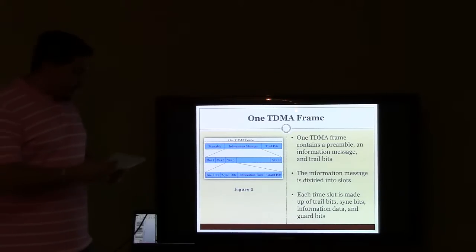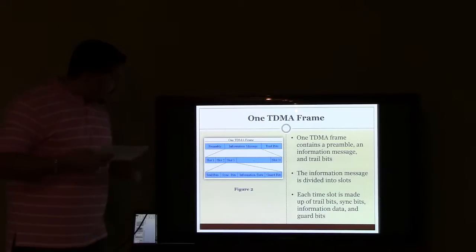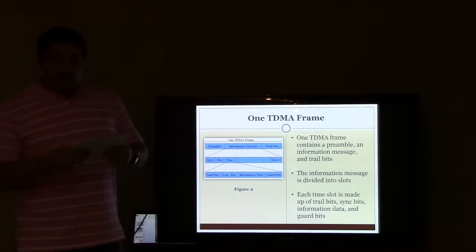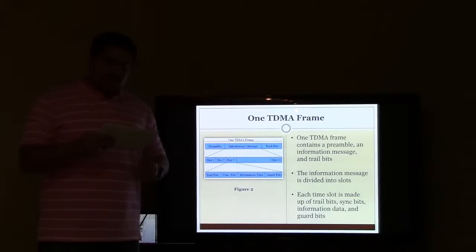The frames are divided into a preamble, information message, and trail bits as can be seen in Figure 2. The preamble provides addressing data between the mobile station and the base station as well as synchronization data.